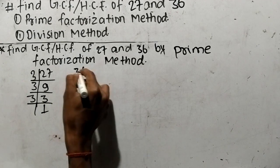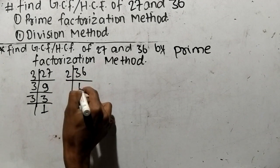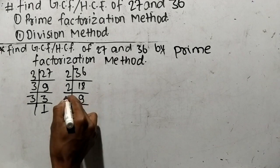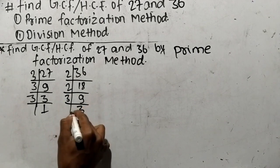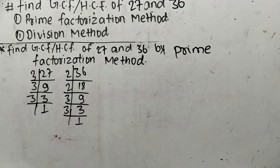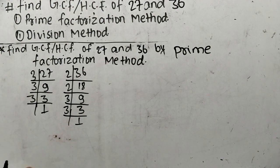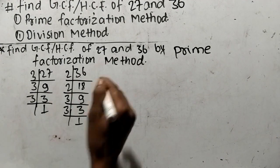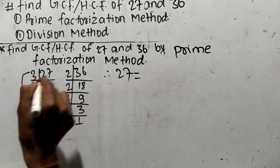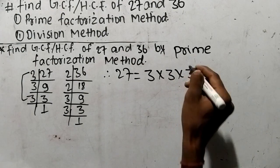In the same way we shall find out the prime factors of 36. It is 2 times 18 equals 36, like 2 times 9 equals 18, and 3 times 3 equals 9, and at last 3 times 1 equals 3. So we have found out the prime factors of 27 and 36. From these prime factors we can write 27 is equal to 3 times 3 times 3.